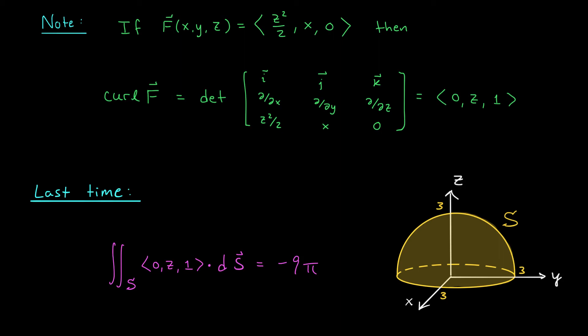because this is the same vector field we used in the last video. In fact, in our last lesson, we computed the surface integral of this vector field over the exact same surface. Last time, we called it S1, but it's still the same cap of the sphere of radius 3. With a fair bit of effort, we were able to show last time that the surface integral of this vector field was equal to -9π.